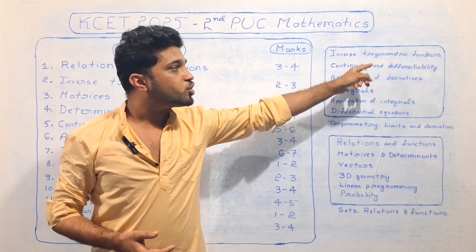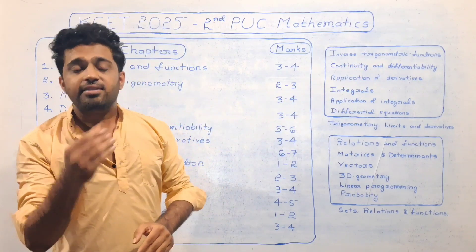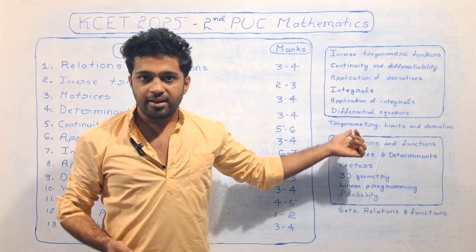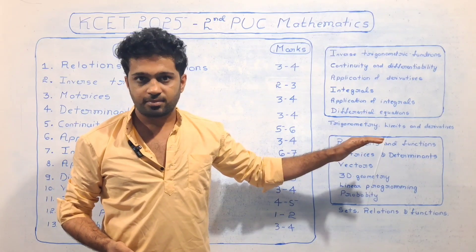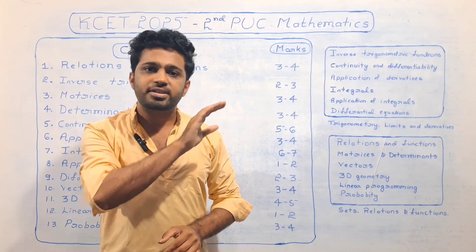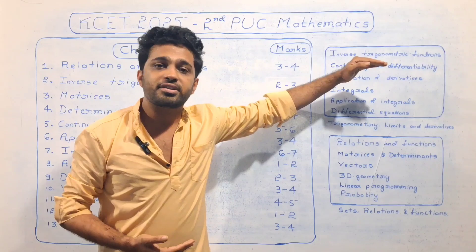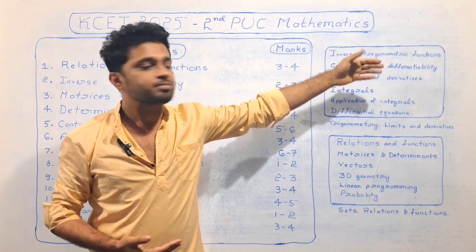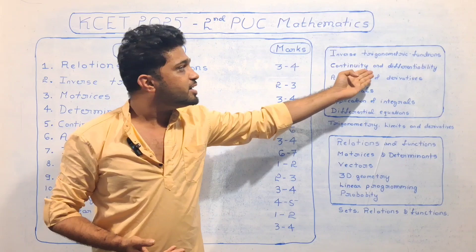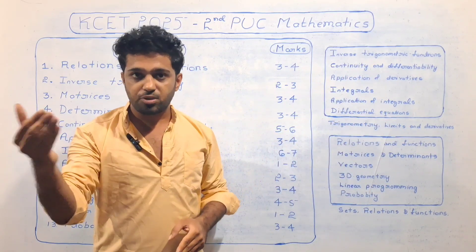To understand Inverse Trigonometric Functions, if you study the first PUC trigonometry chapter, you will study the basics. If you study the trigonometric basics from first PUC, then you will be able to study Inverse Trigonometric Functions in second PUC. That leads into Continuity and Differentiability, which is based on Limits and Derivatives from first PUC.